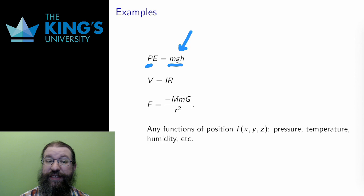or three variables if you care about the variation of the acceleration due to gravity at different altitudes. Potential energy is a scalar, so this is a scalar field in two or three variables. Likewise from physics, some of you may remember that the voltage in a circuit is calculated by the current, i, multiplied by the resistance, r. This is a function of two variables, and the voltage is the scalar, so this is a scalar field in two variables.